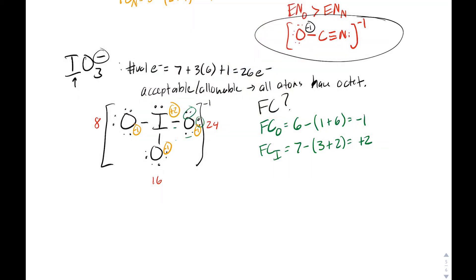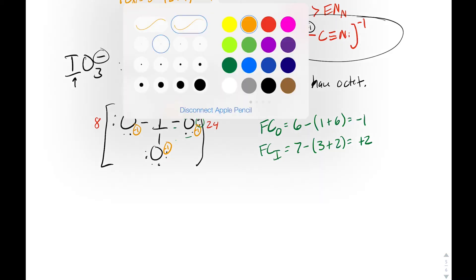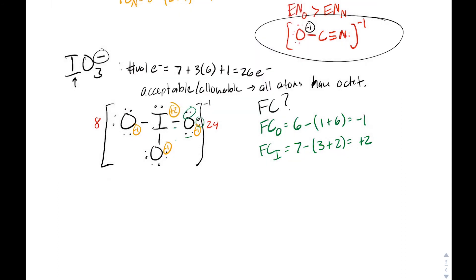We're not on a good track — every atom has a non-favorable formal charge. We want to minimize the number of atoms with formal charges. So we ask: what could this molecule do to decrease formal charges? Can iodine expand its octet? Iodine is in period five, which is period three or below, so yes, it can expand its octet.